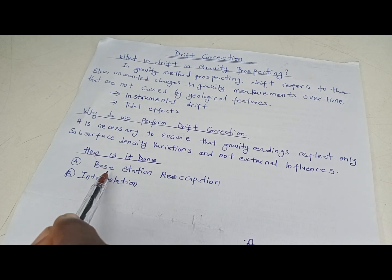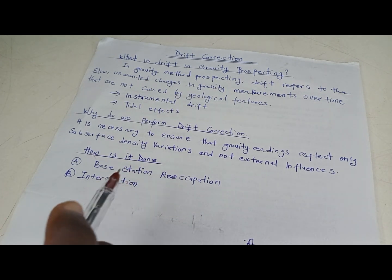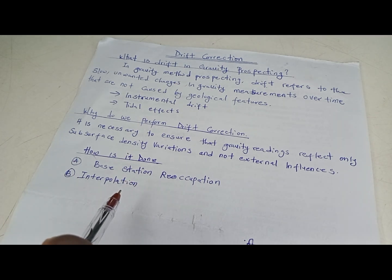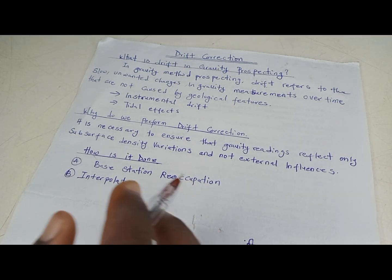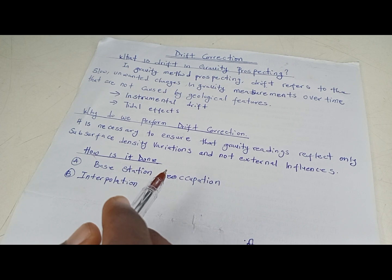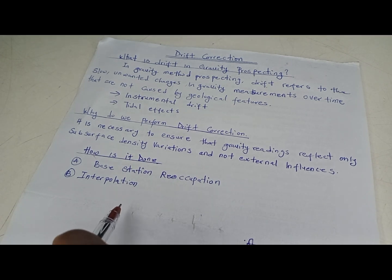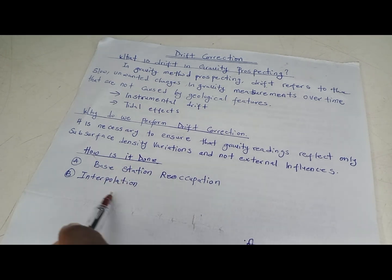One of the ways drift correction is done in the field is by base station reoccupation. Have you ever asked yourself why we have to go back to the base station? After taking some readings or after some time, it is so that we can correct for the drift. Drift is an external factor, so we can correct for it. Interpolation is also a way that we can correct for drift, and the formula we use for drift correction is an interpolation formula.